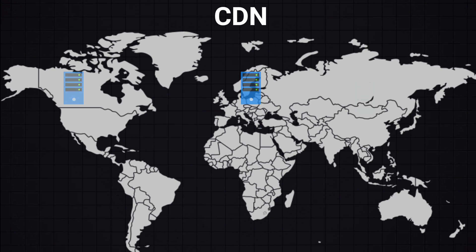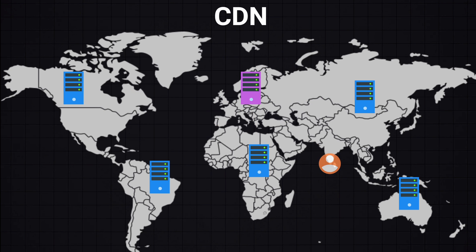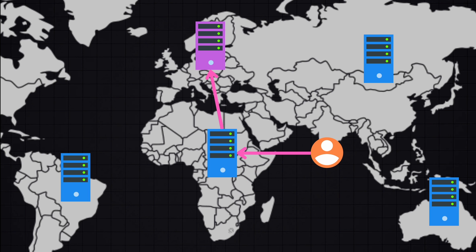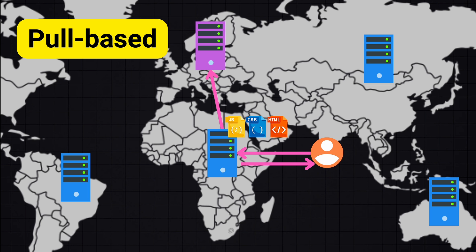Another type of caching is CDNs, which are a network of servers distributed geographically. They are generally used to serve static content such as JavaScript, HTML, CSS, or image and video files. They cache content from the original server and deliver it to users from the nearest CDN server. When a user requests a file, the request is redirected to the nearest CDN server — if it has the cached content it delivers it; if not, it fetches from the origin server, caches it, and forwards it to the user. This is the pull-based CDN type, where the CDN automatically pulls content from the origin server when first requested. It's ideal for websites with a lot of static content that is updated regularly and requires less active management.